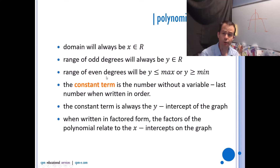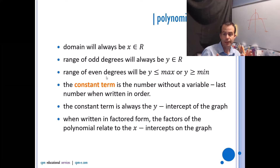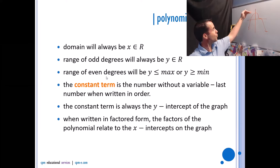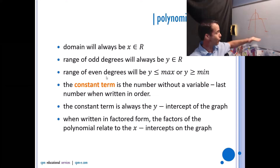The domain will always be a member of the reals. The range depends on whether the degree is odd or even. If odd, it will be a member of the reals. If even, it'll be restricted — for example, if the graph opens down, the range would be y is less than or equal to the maximum point. If it opens up instead, the range would be y is greater than or equal to whatever the minimum point would be.